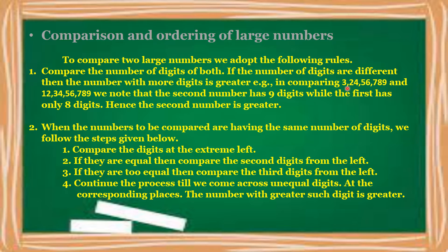Example 4: comparing 3 crore 24,56,789 and 12 crore 34,56,789 — which figure is greater? First, we count their digits. The first number consists of 8 digits, while the second number consists of 9 digits. After comparison, the figure with more digits is automatically greater. Hence, the second number is greater.